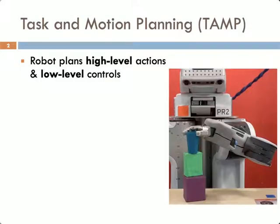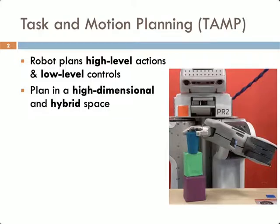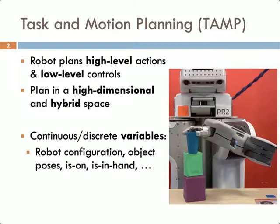The application for this work is robotic task and motion planning. This is planning for a robot to achieve a task such as stacking a tower of blocks or cooking a meal, and requires planning not only the high-level sequence of actions to consider, but also the low-level motions that make it feasible. This is typically viewed as a search in a high-dimensional and hybrid space, where there are variables that are both continuous and discrete, such as robot configurations and object poses, and relationships like is something on something else, is something in the hand, is something cooked.